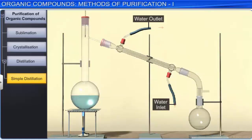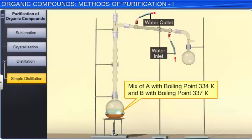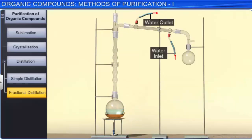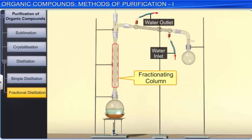Fractional distillation is used to separate liquids which have a small difference in their boiling points. In this technique, a fractionating column is fitted over the mouth of the round-bottom flask. The purpose of the fractionating column is to increase the area of the cooling surface and to provide hurdles to the ascending vapors.